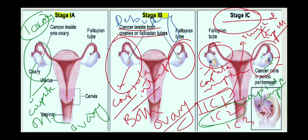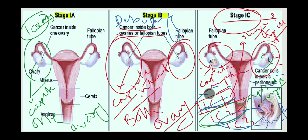In 1c2, the ovary capsule is ruptured before surgery, whereas in 1c1 the capsule is intact but surgical spill occurs during the operation. Remember these differences as exam questions are based on these stages. In 1c3, tumor is detected on the ovary or fallopian tube surface, and malignant cells are detected in ascites or peritoneal washing.